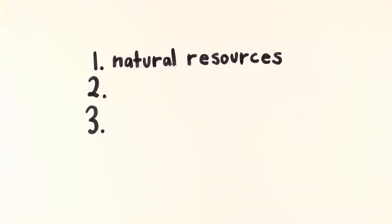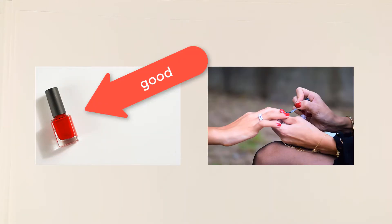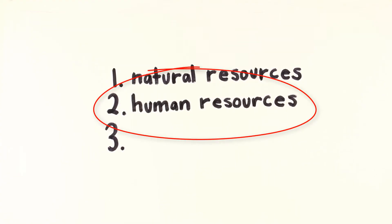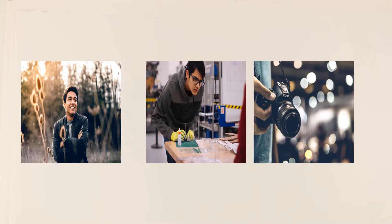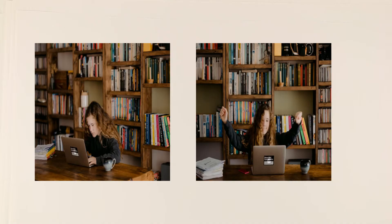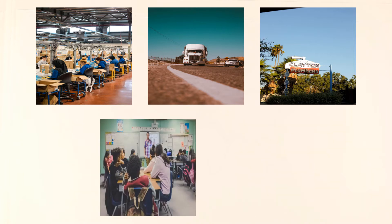First, natural resources are any natural material — like land, water, oil, timber, iron, or coal — that can be used to produce goods and services. Second, human resources refer to any person and their particular abilities and skills. This is the concept of people and their potential as a resource.